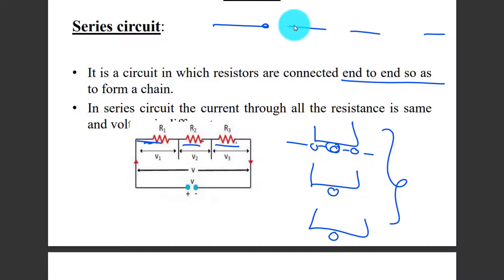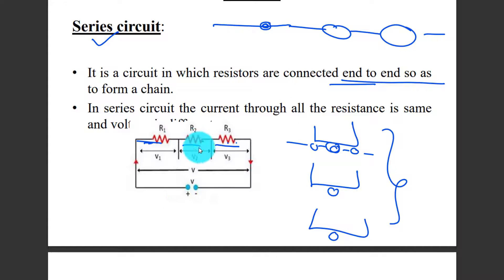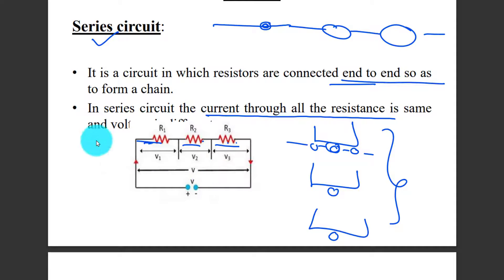End-to-end connection in the form of a chain is called a series circuit. In a series circuit, the current through all the resistances is the same, while the voltage is divided across each resistance.